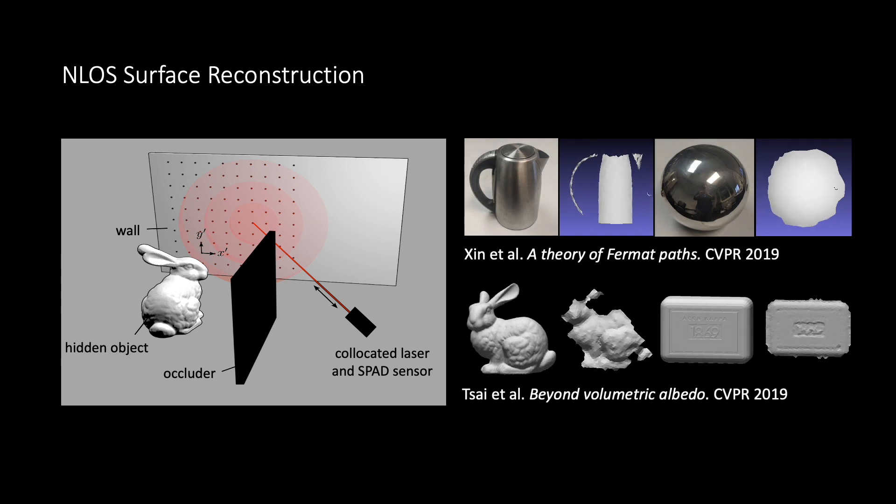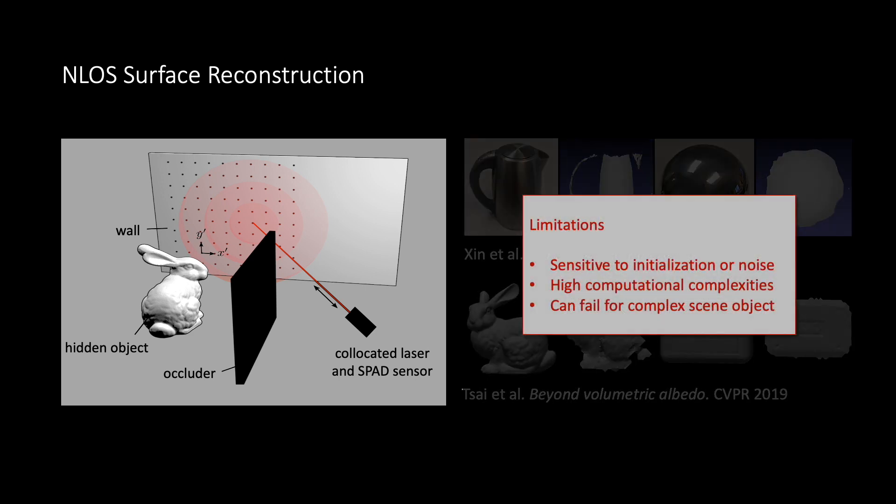Recent non-line-of-sight surface reconstruction methods have shown promising results. However, they still have a number of drawbacks. These include sensitivity to algorithm initialization or capture noise, and high computational complexity. Moreover, they can fail to reconstruct the scene altogether if the scene geometry is complex.